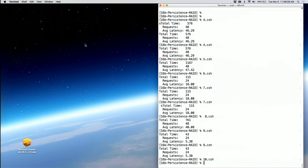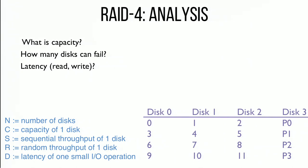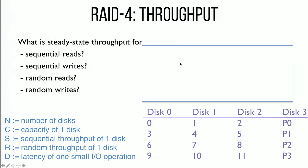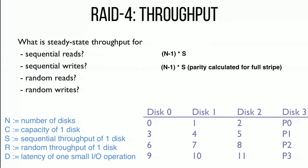Analysis of RAID 4: Capacity is (N minus 1) times C. How many disks can fail: one. Latency for reads is D; for writes we have to read and write the parity disk so it's 2D. Steady-state sequential read throughput is (N minus 1) times S — all data disks doing useful sequential work. Sequential writes are similar — (N minus 1) times S — we calculate parity in memory and write it out sequentially alongside the data.